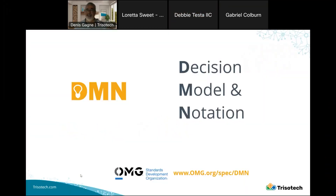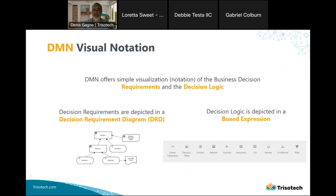DMN is the Decision Model and Notation, and it is a specification published by the Object Management Group. You can find the actual specification freely and openly online. DMN is a visual notation that offers a simple visualization — what we call the notation — of business decisions, both the requirements for the decision and the decision logic.